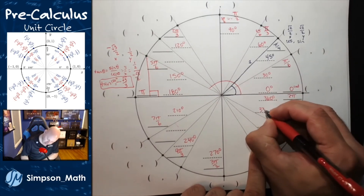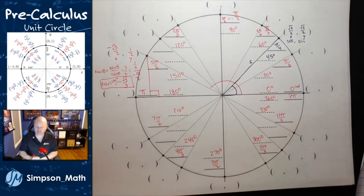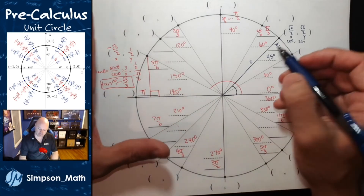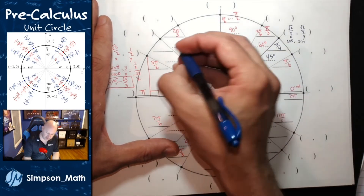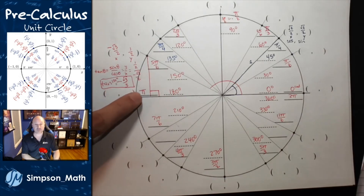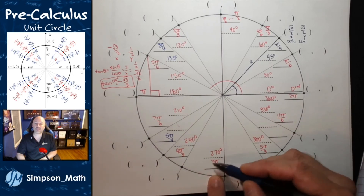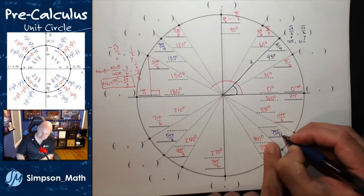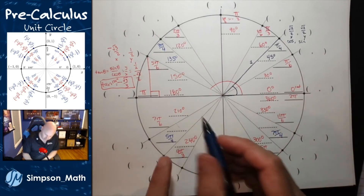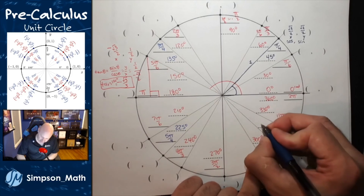Another 30 degrees gets me to 330, which is going to be 11 pi sixths. Now I'll do the 45s in a different color. 45 and 90 I already have. Another 45 is 135, which is 3 pi fourths. Then 4 pi fourths, 5 pi fourths, 6 pi fourths reduces, 7 pi fourths, and 8 pi fourths — 8 divided by 4 is 2 pi. 180 plus 45 is 225, and 315 degrees is 7 pi fourths.